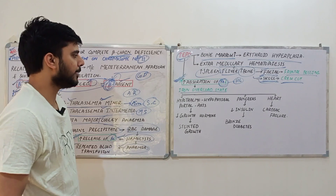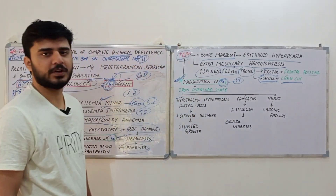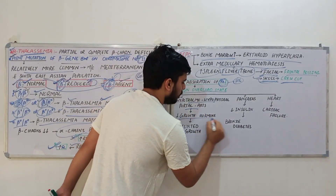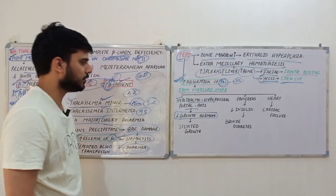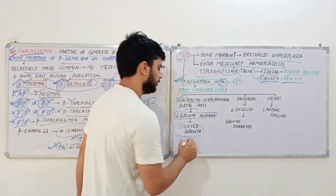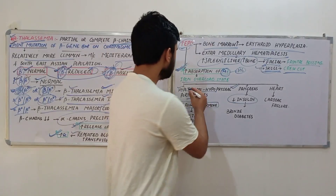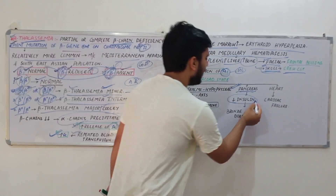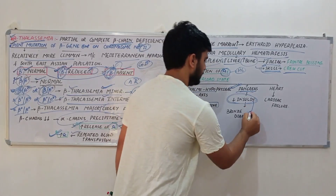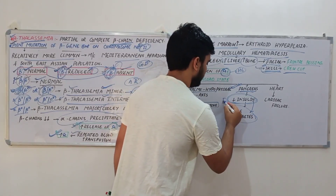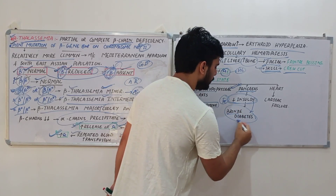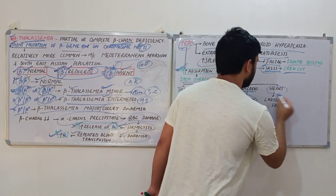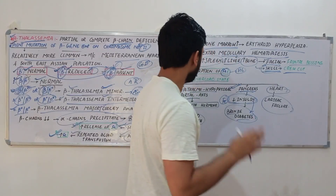Increased iron in the body first affects the hypothalamo-hypophyseal portal axis, reducing growth hormone synthesis and causing stunted growth. It also affects the pancreas, decreasing insulin and leading to diabetes. This diabetes is called bronze diabetes due to the bronze color given by iron deposits. Finally, increased iron affects the electrical activity of the heart, leading to cardiac failure.